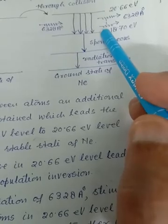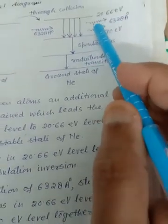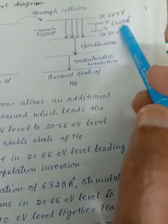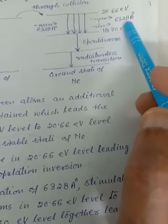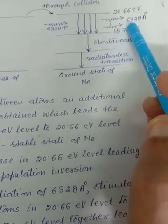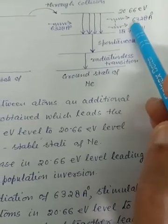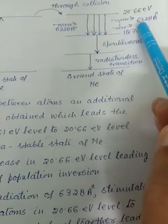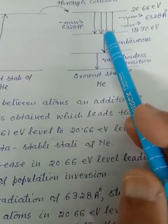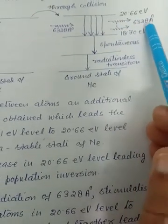So we get laser light — light amplification by stimulated emission of radiation — and in this way, from the helium-neon laser, we obtain 6328 angstroms. You have also done this experiment in the lab, using the helium-neon source. In the single slit experiment to determine the width of the single slit, you use the lambda value of the helium-neon source — 6328 angstroms. So in this way we obtain the laser beam.